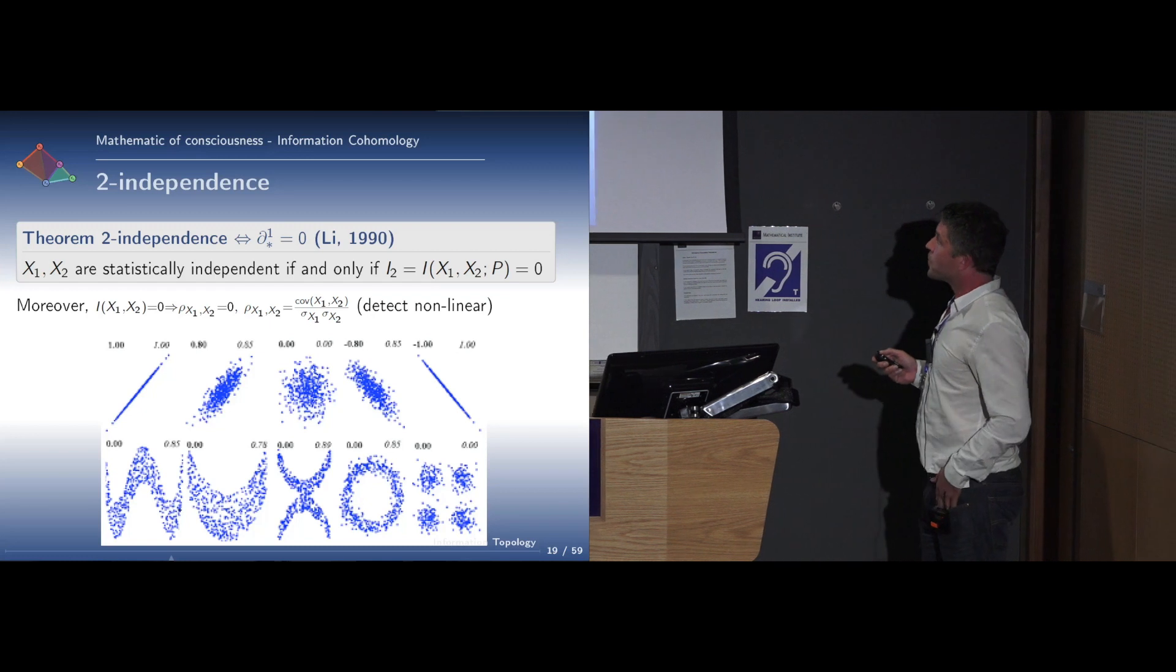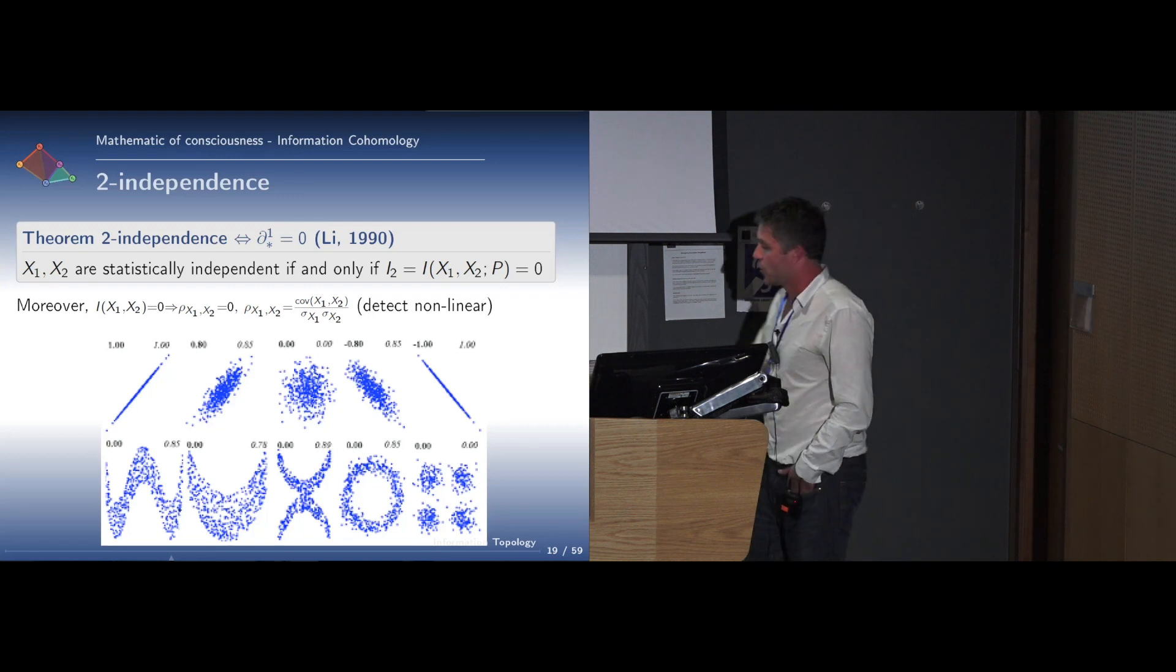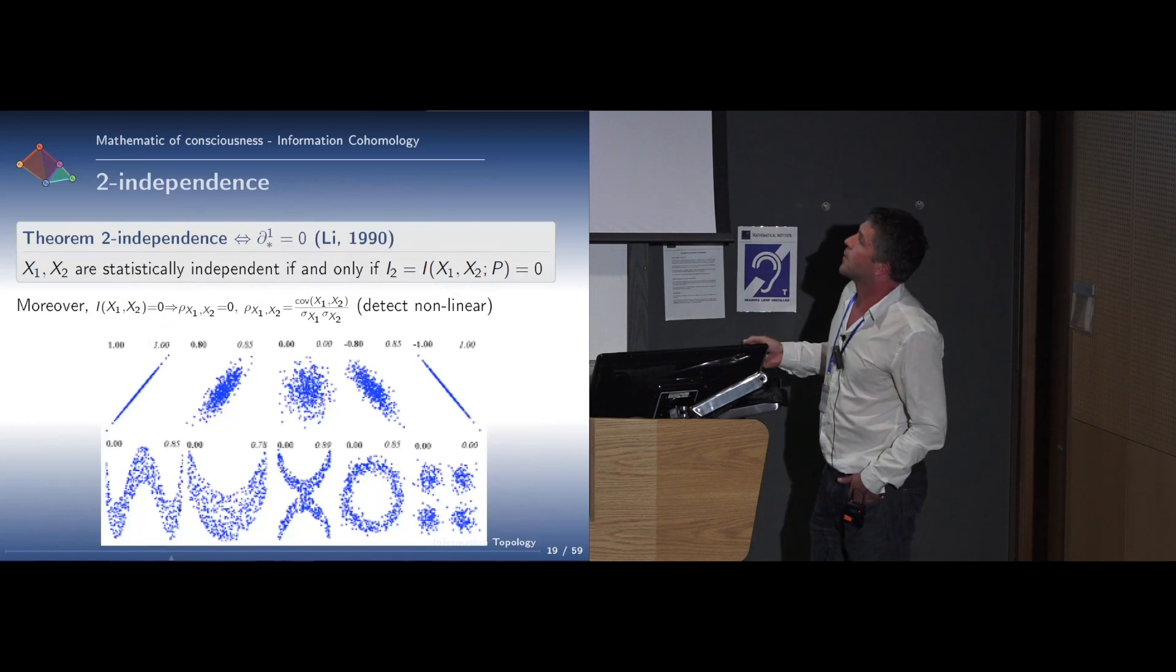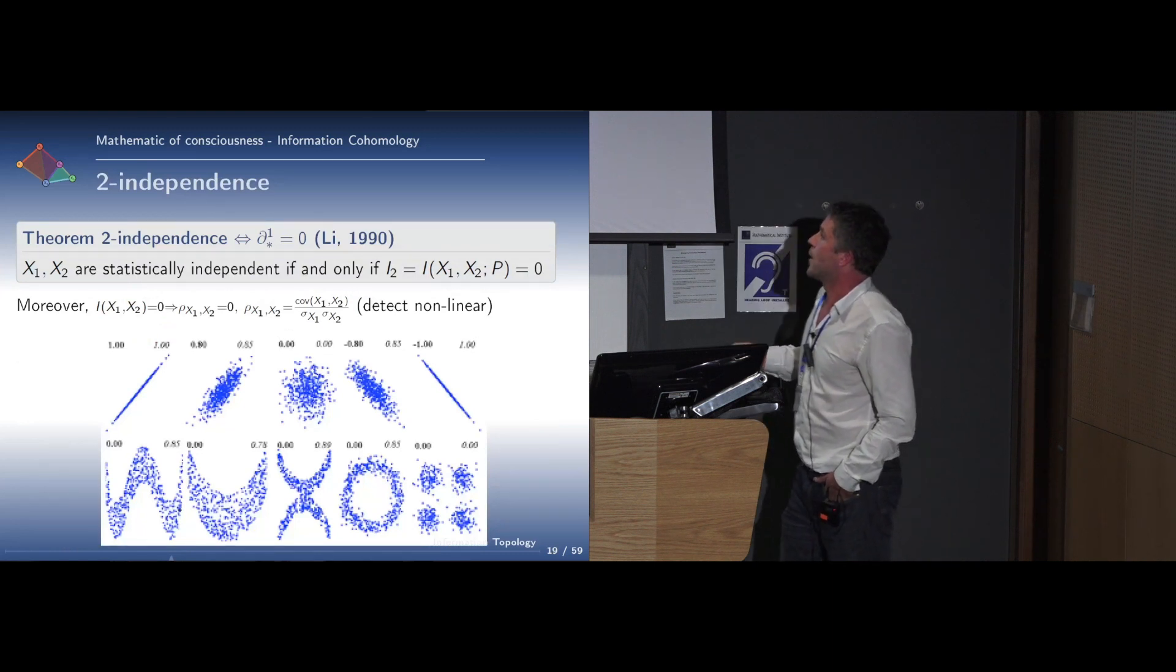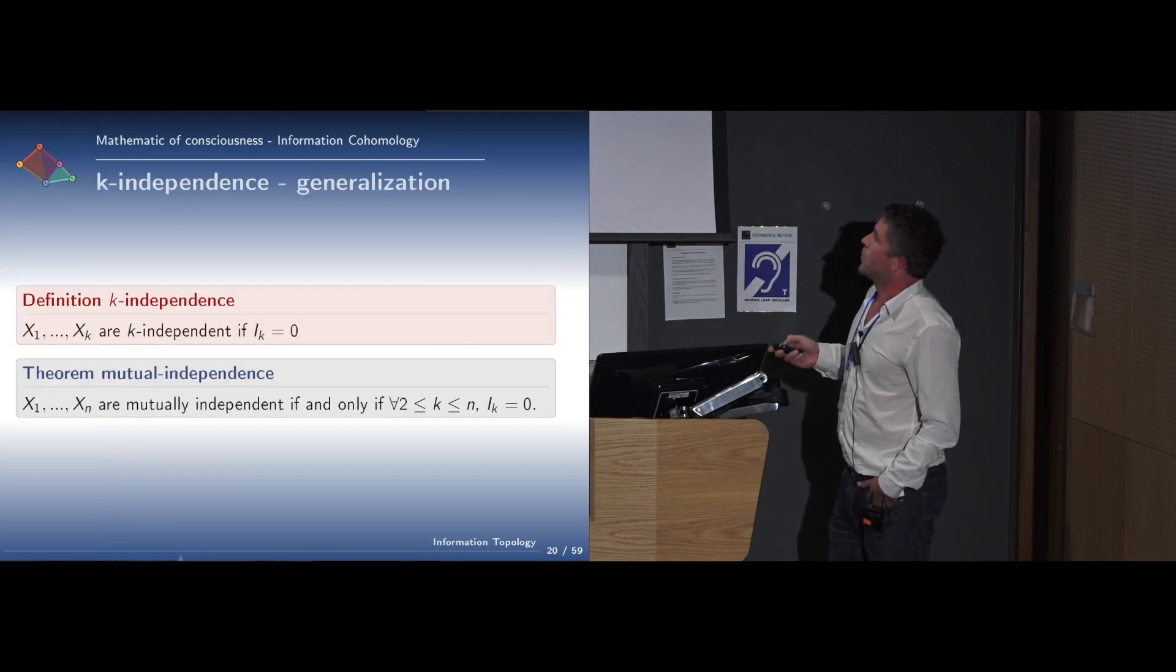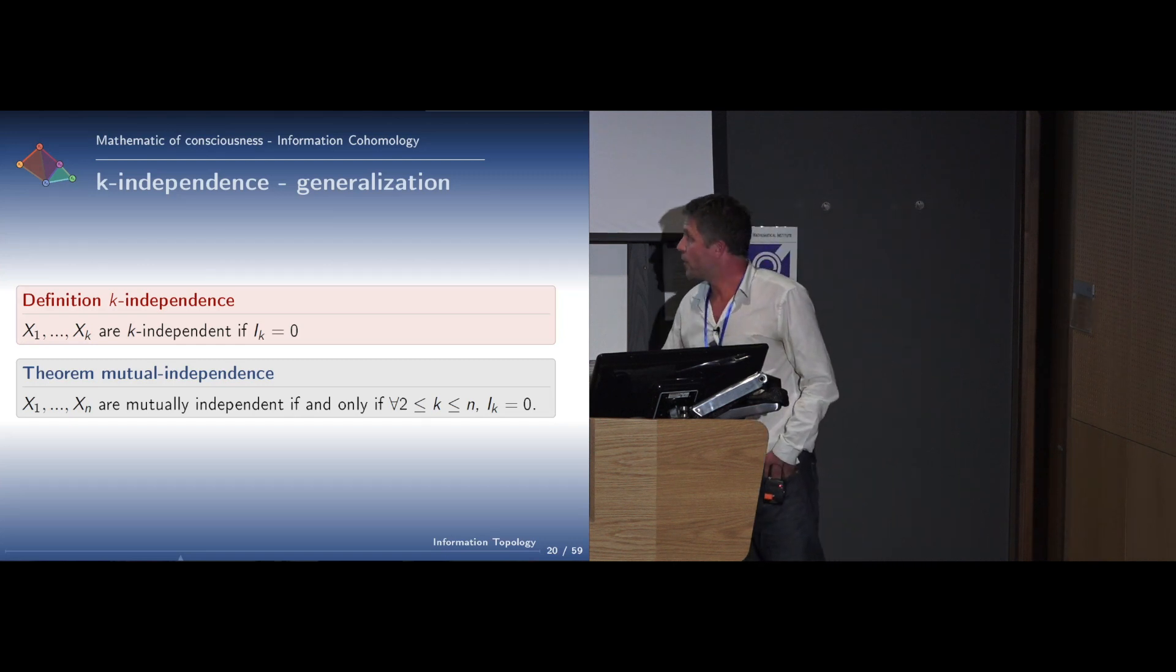What are mutual informations? They measure dependencies. For example, we have the theorem that two variables are statistically independent if the mutual information vanishes. They are generalizing correlation coefficients to non-linear relations. This can be generalized to a multivariate case, and several variables are mutually independent if and only if the 2^n - n - 1 mutual information equals zero.